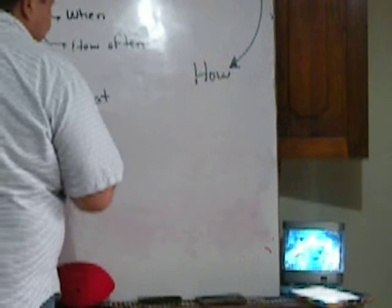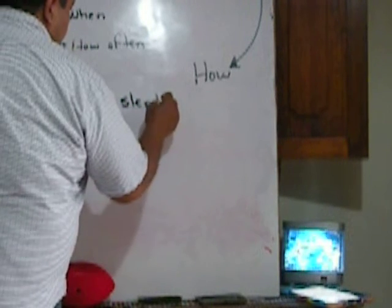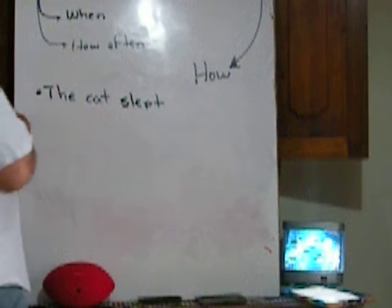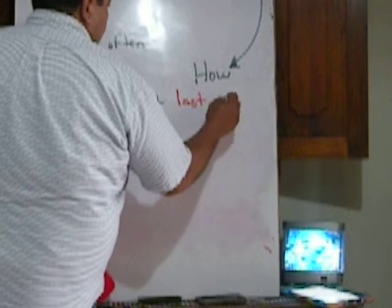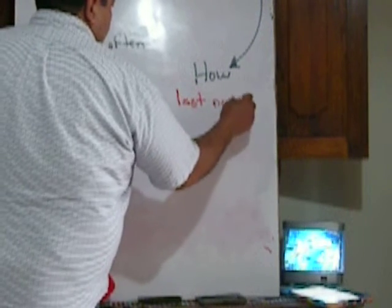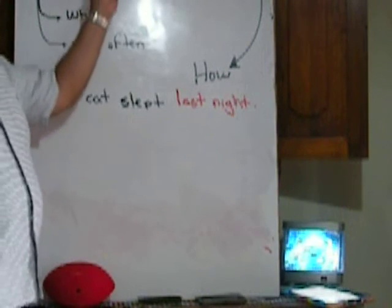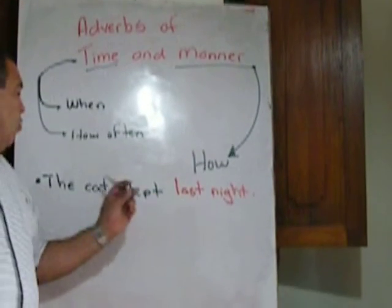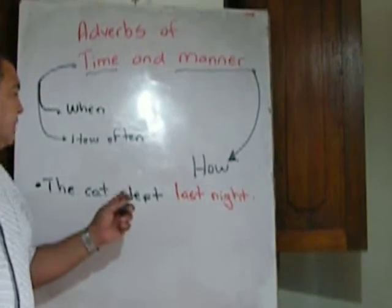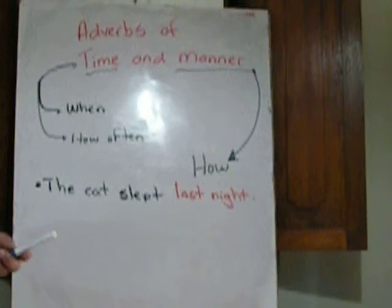I can say: the cat slept last night. This is the adverb of time. 'Last night' tells me when did the cat sleep.